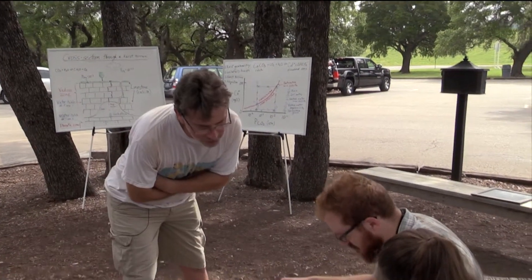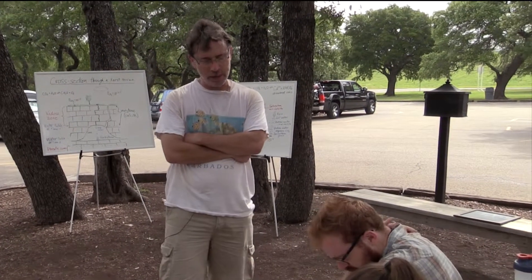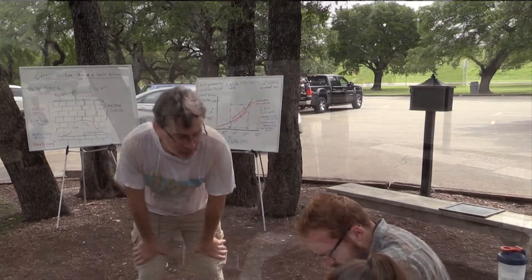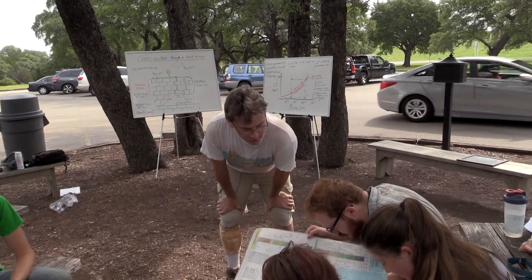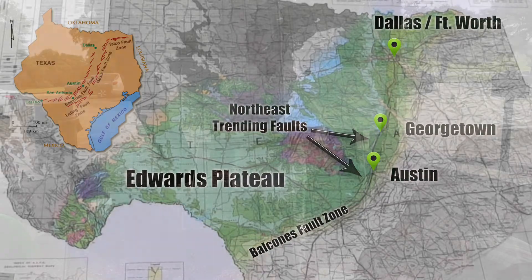Looking at the black lines on the map — those are faults of the Balcones Fault Zone. Are there any in the Georgetown area? Yes, there are a number of them. Their orientation appears to be north-northeast. Everyone seems to be in agreement on that general orientation.